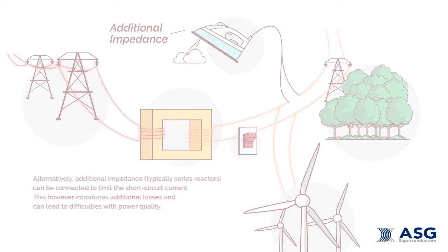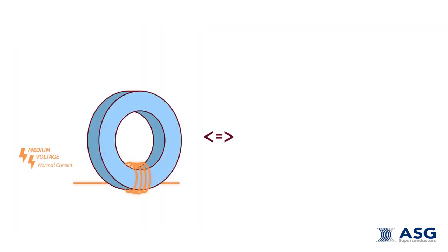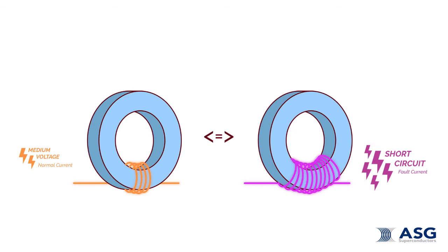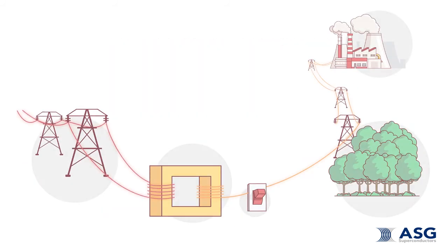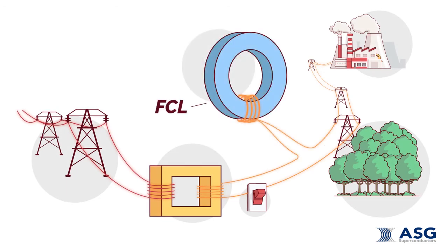We have a new device which provides a real solution to this type of problem. The fault current limiter is a component with dynamic impedance. It exhibits negligible impedance when carrying normal load current, and the impedance rises automatically and rapidly in the presence of much higher current. The FCL can be safely added to an existing network without making any other changes.